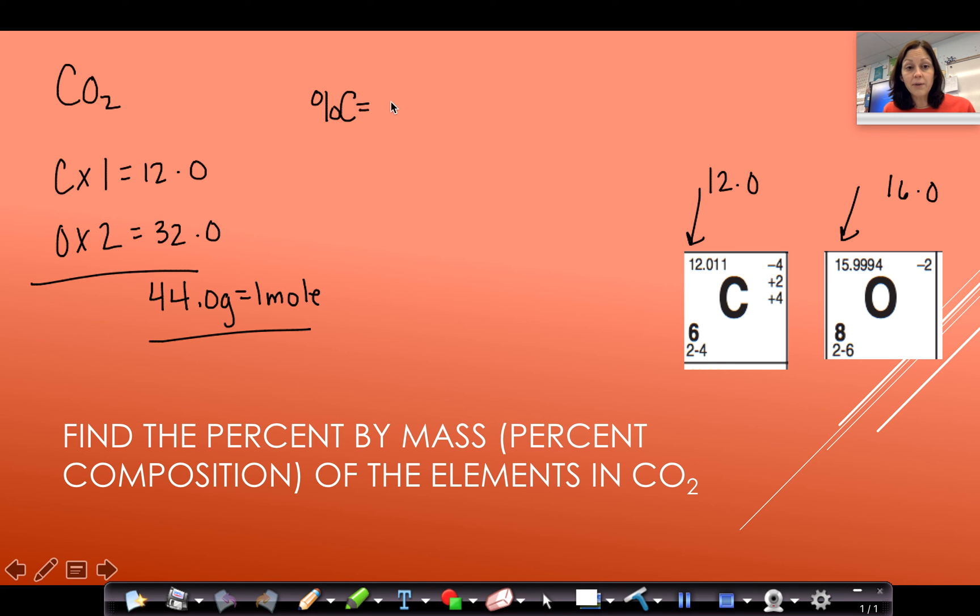If I want to do my percent of carbon, I take the mass of carbon in the compound, which was the 12.0, over the total mass of the compound, which was the 44.0. And we multiply by 100. And so this compound is 27.3% carbon.